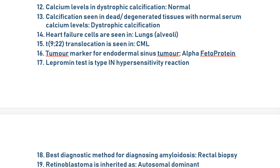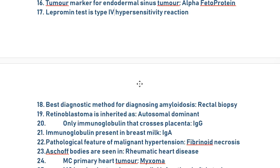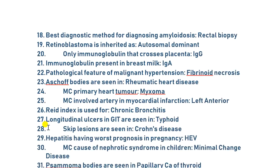Heart failure cells are seen in the lungs — this is always a confusion for many, whether it's lungs or liver, so remember: heart failure cells are seen in lungs. Translocation 9;22 is seen in CML. Tumor marker for endodermal sinus tumor is alpha-fetoprotein. Lepromin test is a type 4 hypersensitivity reaction. The tuberculin skin test is also type 4, that is delayed hypersensitivity reaction.